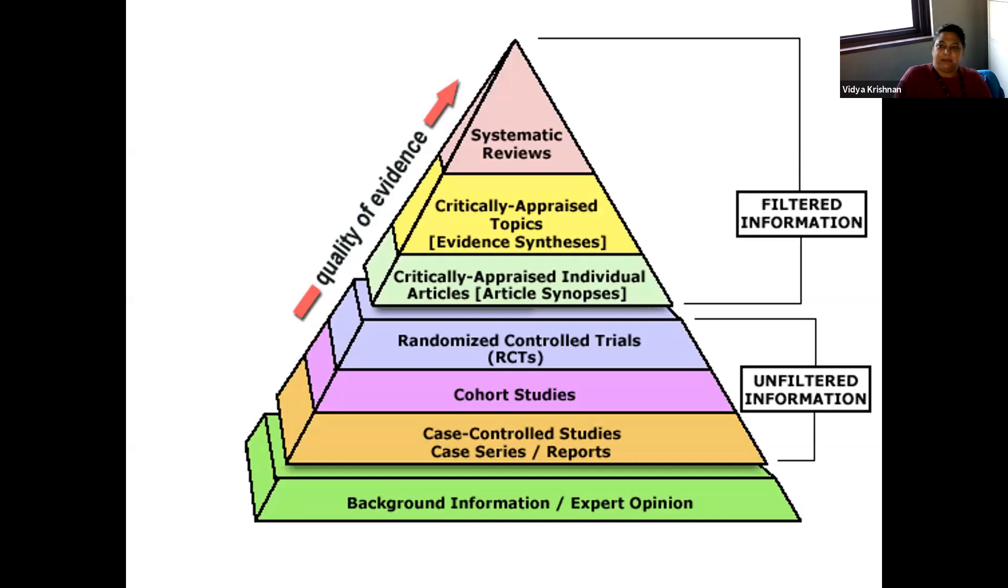You guys are probably familiar with this pyramid of just the quality of evidence that we can look at. At the very base is just background information, expert opinion. Going up, we have unfiltered information and primary literature like case series, case control studies, cohort studies, randomized control trials are considered the highest level of unfiltered data. And then filtered information is once we sift through all of the knowledge that we have on the topic.